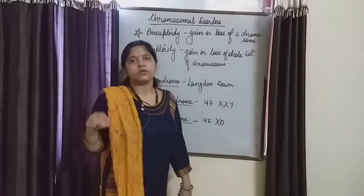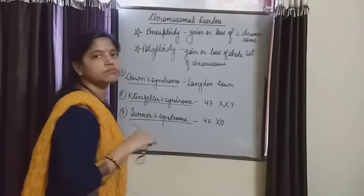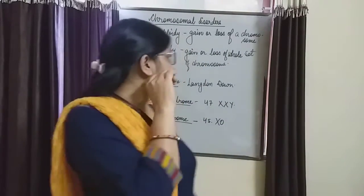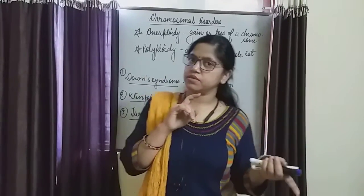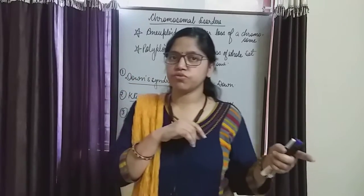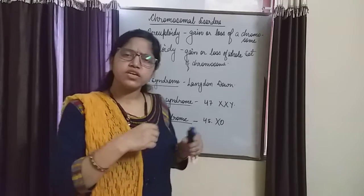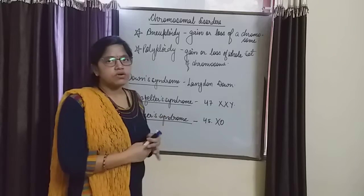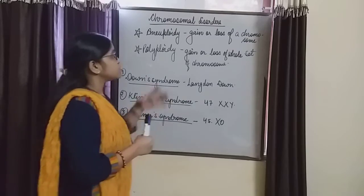The last topic of the chapter is chromosomal disorders. Chromosomal disorders are also genetic disorders and these take place due to the presence or absence of any chromosome — due to the addition of an extra chromosome, whether it is a sex chromosome or any other chromosome, or the deletion of any chromosome, which may lead to disorders said to be chromosomal disorders.